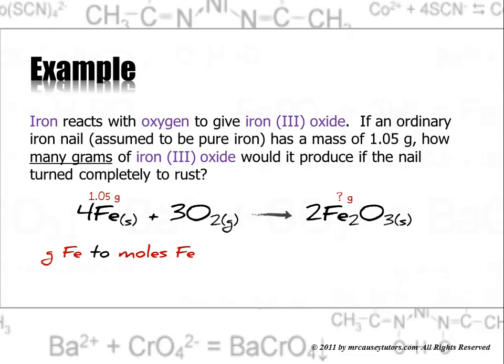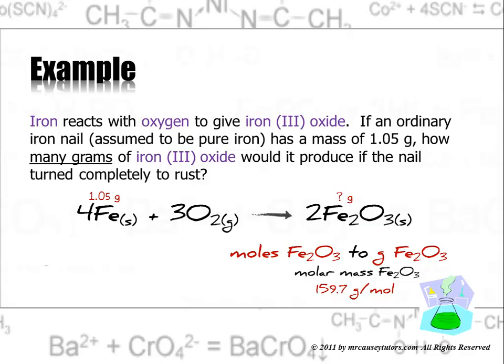First thing I'll do is I'll take the grams of iron and change it to moles of iron. And, I'll do that with the molar mass. I can get that right off the periodic table. Then, I'm going to take moles of iron and change it to moles of iron 3 oxide. Now, that's kind of where the magic is. And, I'm going to use the mole ratio for that. And, the mole ratio in this case is 4 moles of iron to 2 moles of iron 3 oxide. Then, I'm going to take the moles of iron 3 oxide and change it to grams of iron 3 oxide. And, for that, I'm going to use molar mass, which is 159.7 grams per mole. And, that's just by adding everything up in that molecule. Or, actually, that's a formula unit.